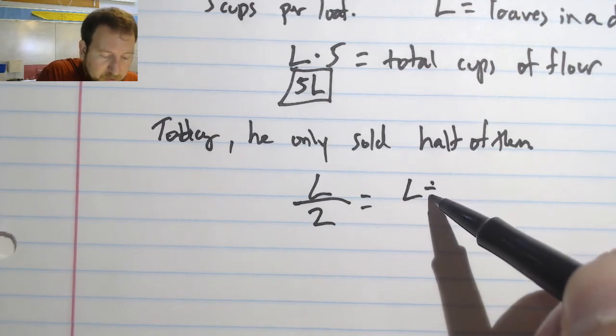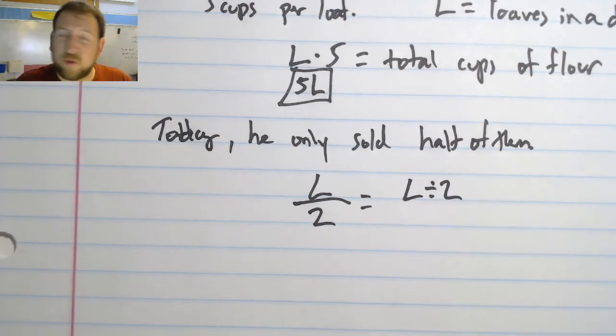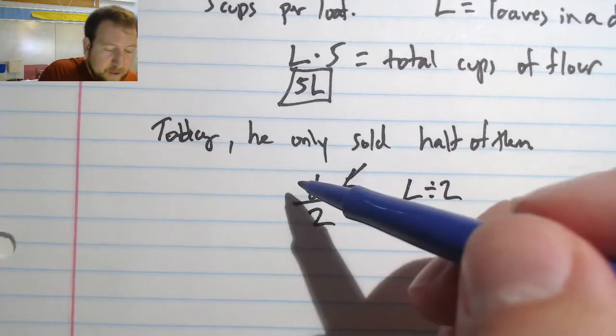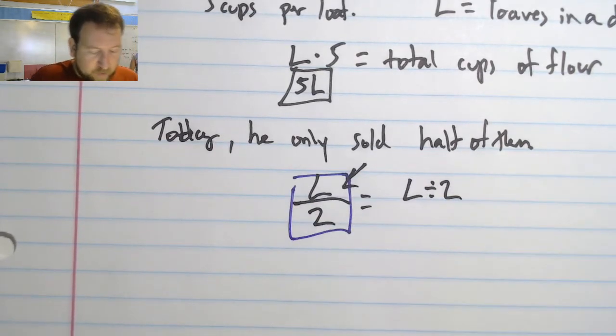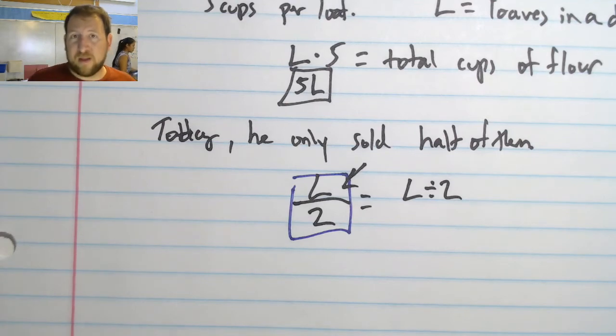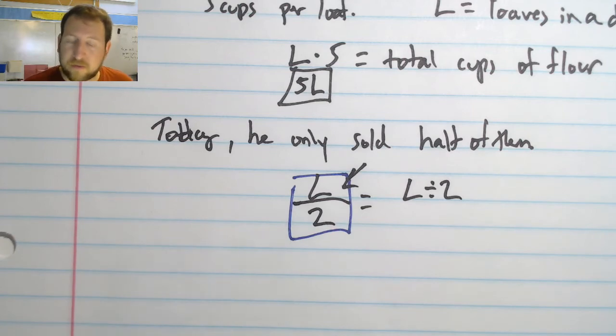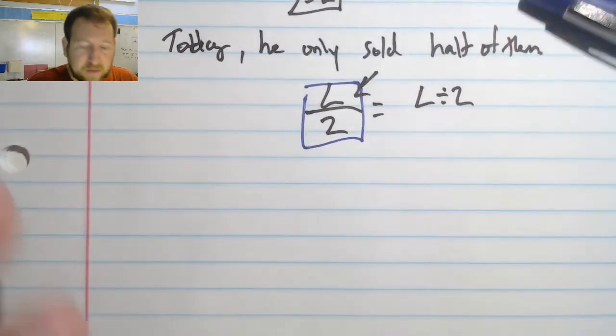Well, if I want to know how many loaves he sold, I can take the number that he made that day, which I know to be L because I've already determined that, and I say, well, half of L is simply L/2. I could write that, or I could write it as L ÷ 2, it doesn't matter which way. This way is what we typically choose as mathematicians, but both are technically correct. So if we're only selling half of them, we can do that. Now I'm going to do a couple more examples.